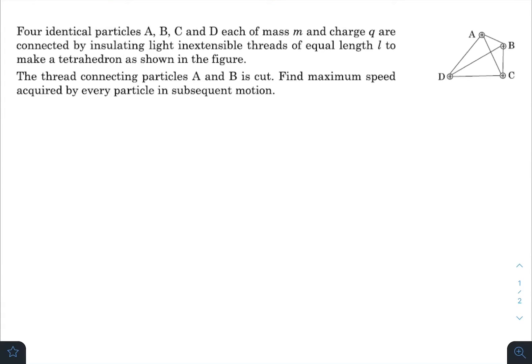What is up everyone, I hope all of you are doing great. In today's question we have four identical particles A, B, C, and D, each of mass m and charge q, connected by insulating light inextensible threads of equal length l making a tetrahedron as shown in the figure. The thread connecting particles A and B is cut, so this thread is broken. Find maximum speed acquired by every particle in subsequent motion.